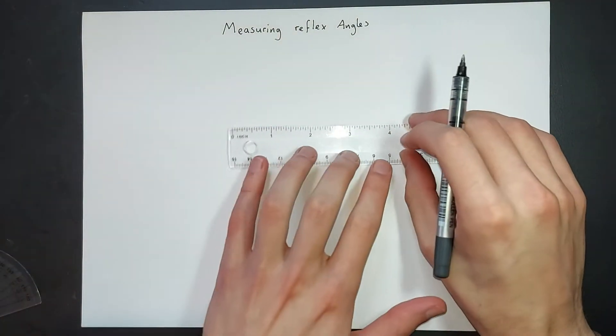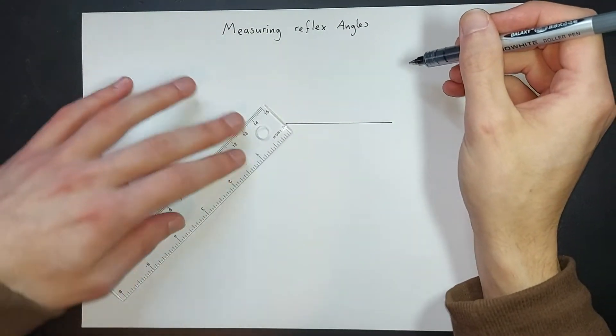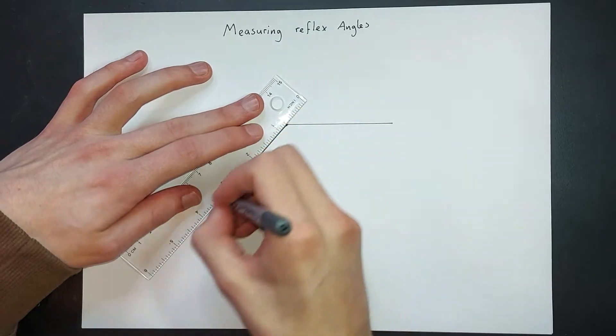So I'll draw a reflex angle, then I'll show you how we measure it. Let's just do a random one, something like that. And let's come off at this angle here.